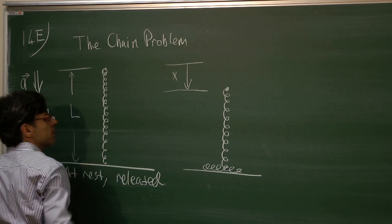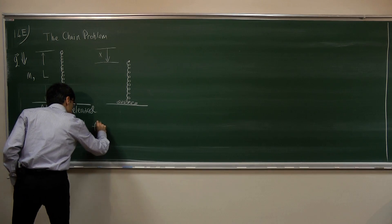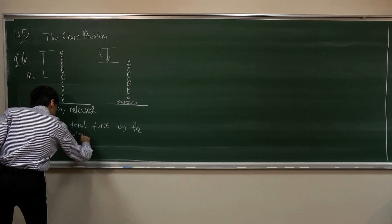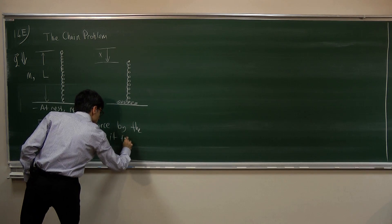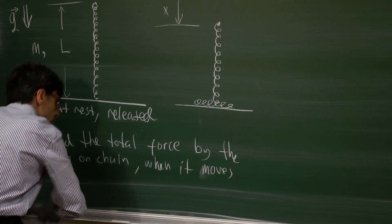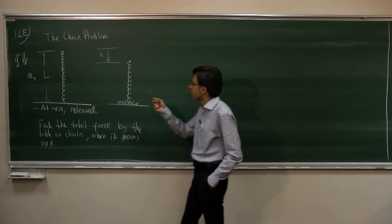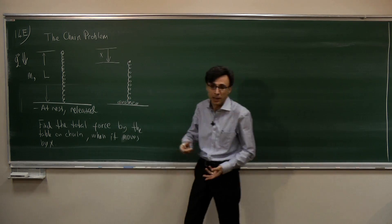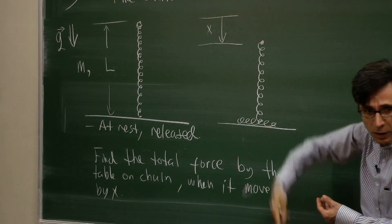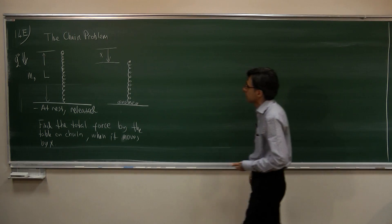Here is the top of the chain. The question is: find the total force by the table on the chain when it moves down by x. Before we start to solve the problem, let us discuss what is going to happen to the links of the chain. Each link of the chain will feel only the gravitational force and nothing else. This is not a rigid body. If the links are not connected to each other, each link will feel only the gravitational force, and thus accelerate downwards with the same acceleration g. Within the same amount of time, each link will travel the same distance in the vertical direction.